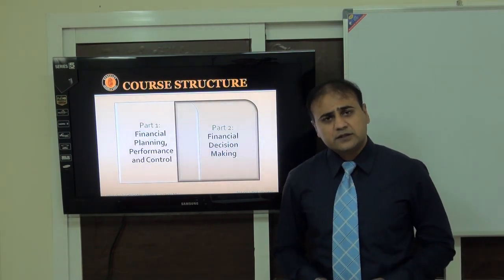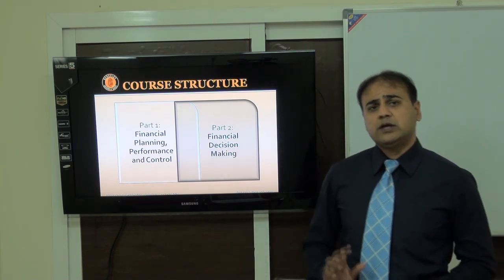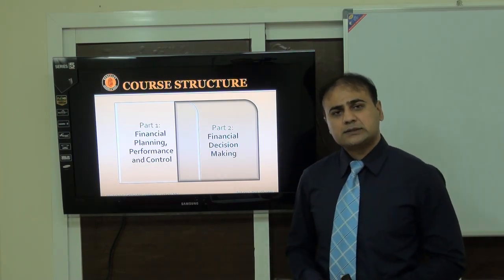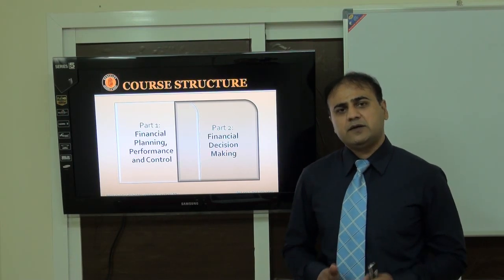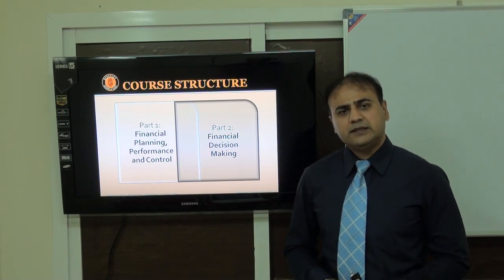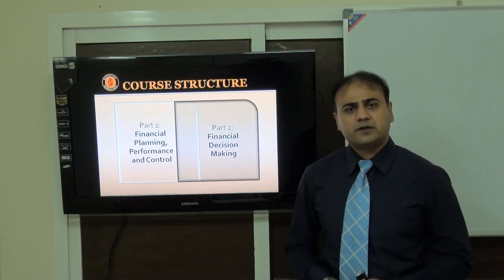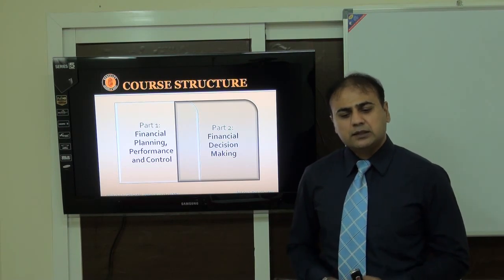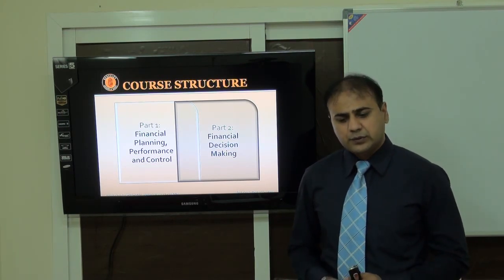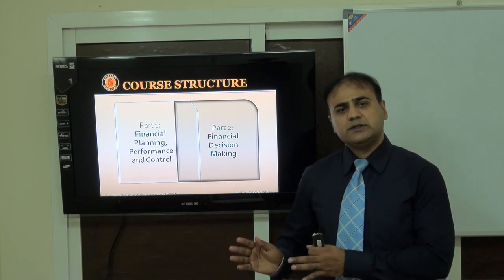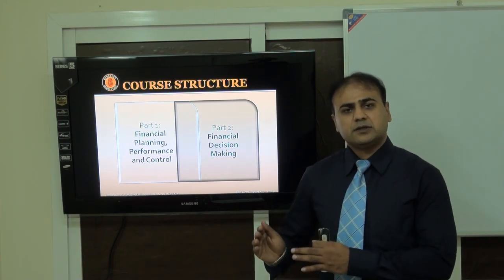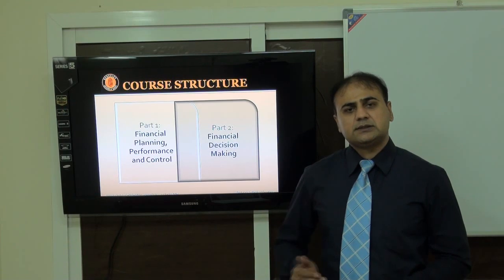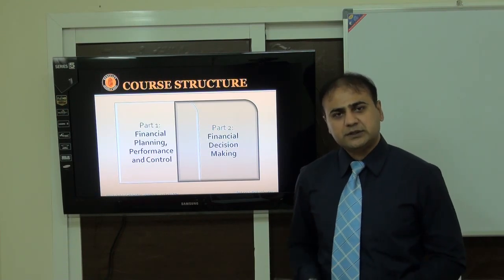The core structure of the CMA is very well designed. It is split into two parts. Part one is based on the concept of financial controlling, planning, performance and control, while part two specifically focuses on financial decisions and financial management.